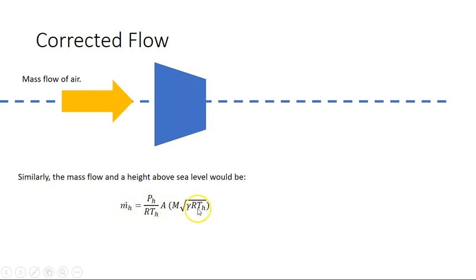Hence, the mass flow at the altitude h will be this equation here. So let's define two terms: δ is the ratio of the pressure at the altitude over the pressure at sea level, and θ is the temperature at the altitude over the temperature at sea level.